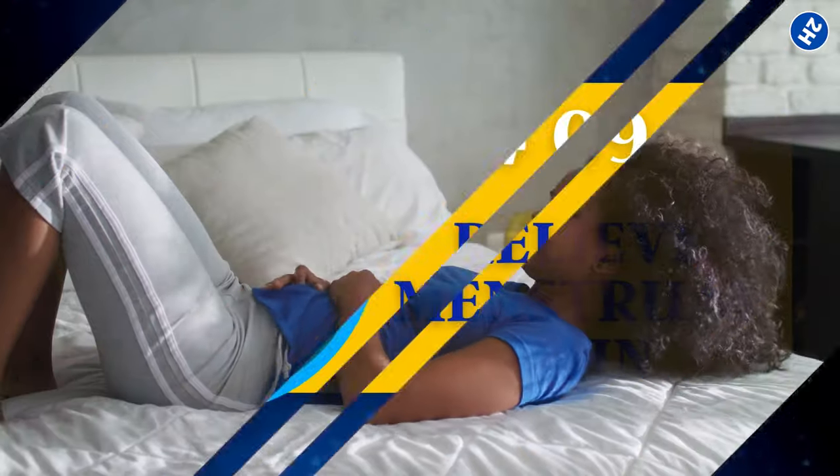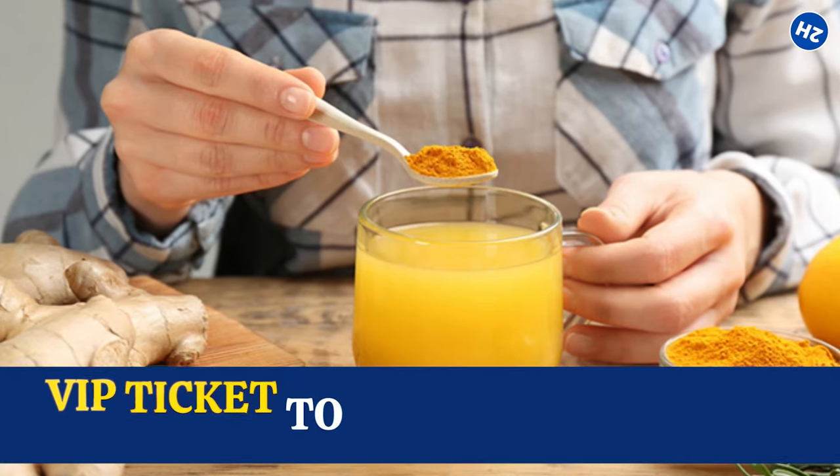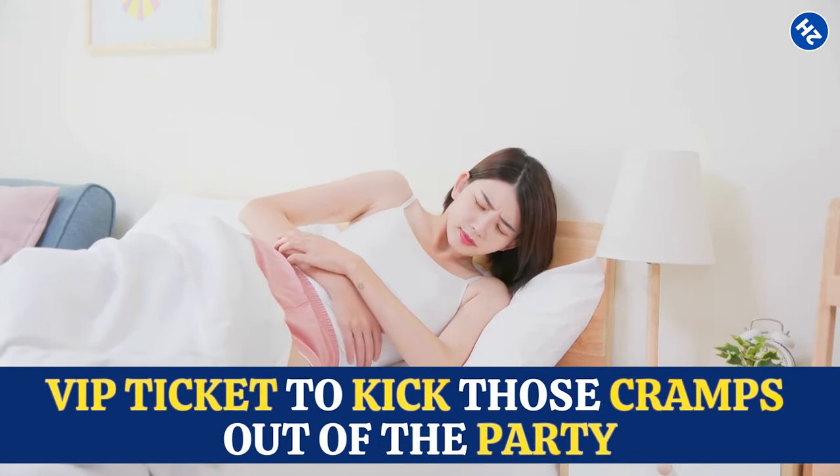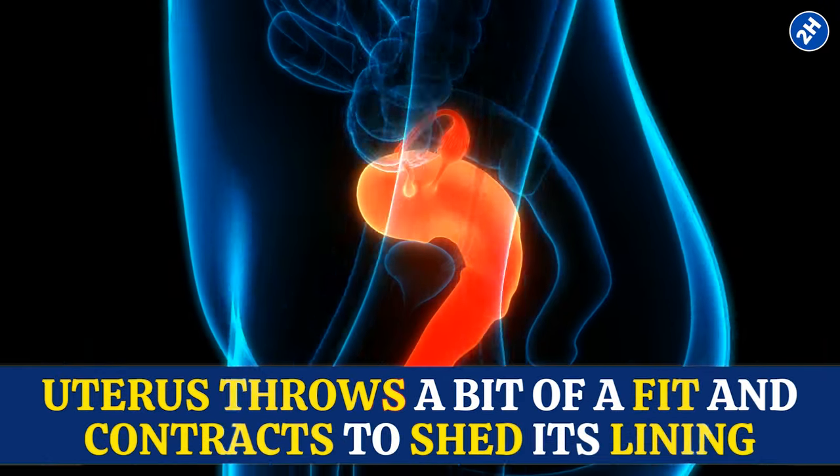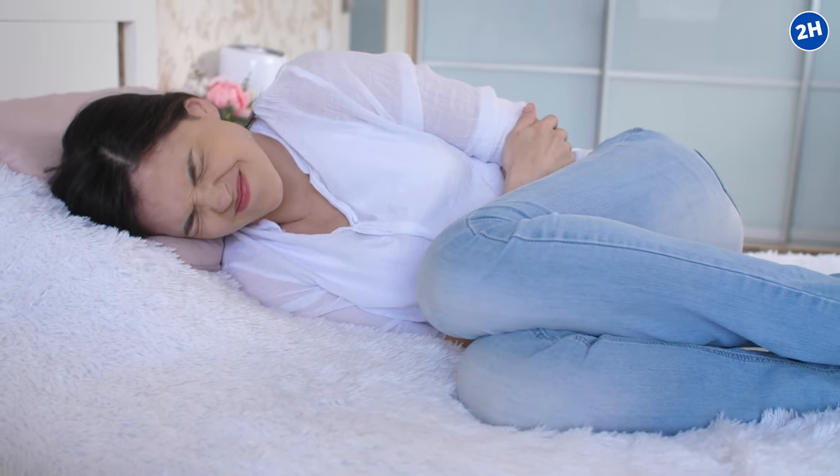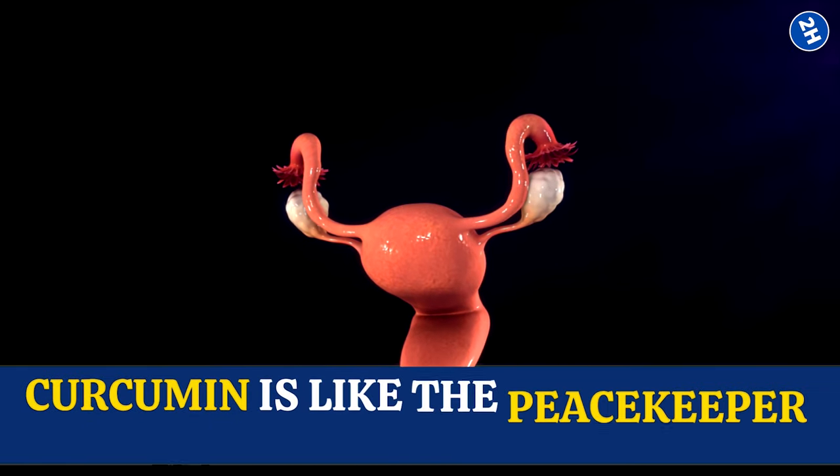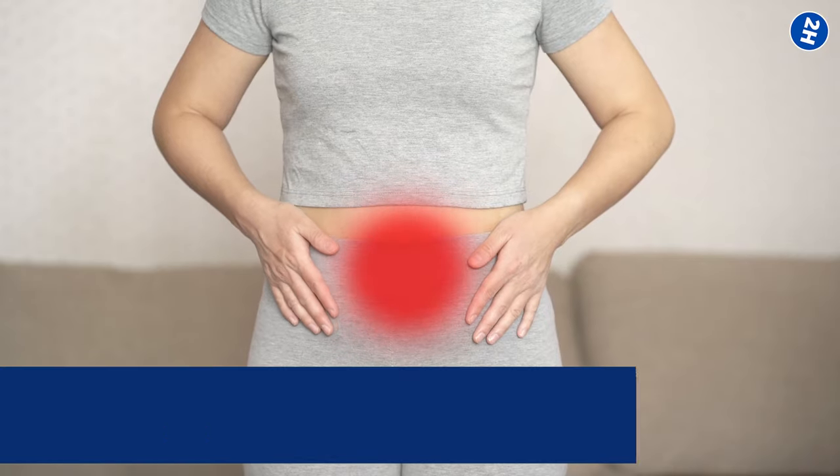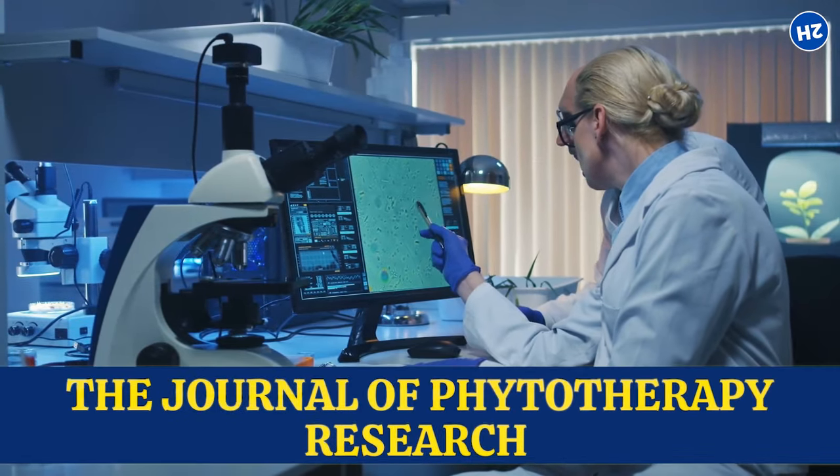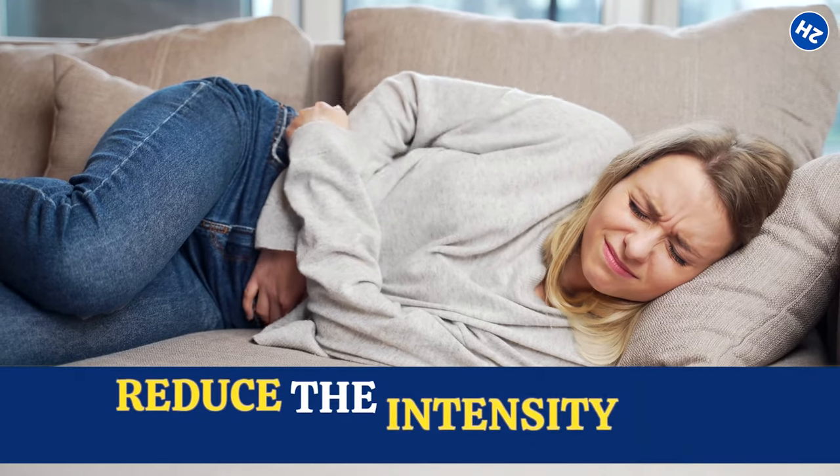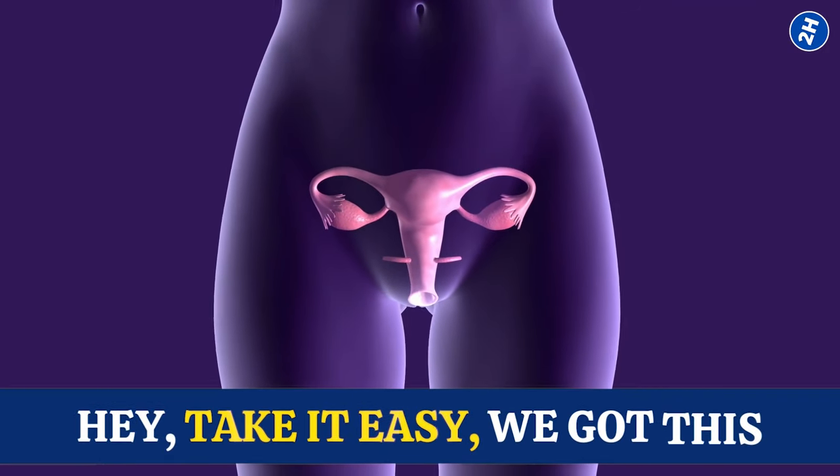Number 9. Relieve Menstrual Pain. Menstrual pain can be a real party pooper. But guess what? Turmeric water might just be the VIP ticket to kick those cramps out of the party. So when your period rolls in, your uterus throws a bit of a fit and contracts to shed its lining. This can cause those uncomfortable cramps. Now let's introduce our hero, curcumin from turmeric. Curcumin is like the peacekeeper in this uterine battle, calming down the muscle contractions and easing the pain. A study published in the Journal of Phytotherapy Research shows that curcumin can reduce the intensity and duration of menstrual cramps. It's like telling your uterus, hey, take it easy, we got this.